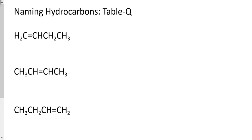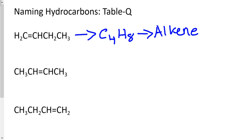Let's try to name the following hydrocarbons. Please pause the video and try to name it by yourself, then play the video again to check if you got it right. For the first compound, I realized it's a hydrocarbon because we only have hydrogens and carbons, and I have four carbons and a total of eight hydrogens.